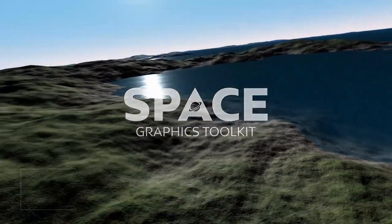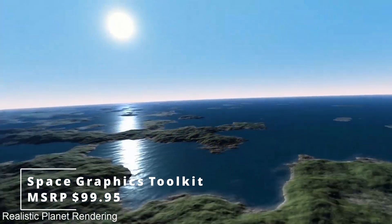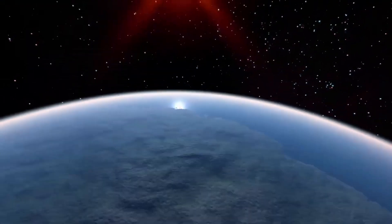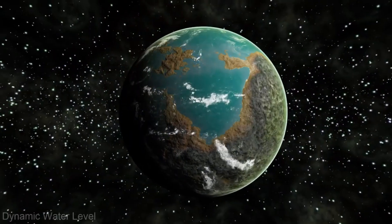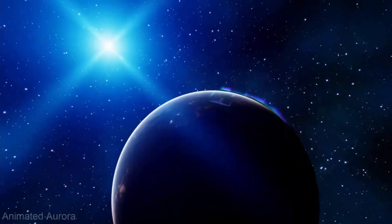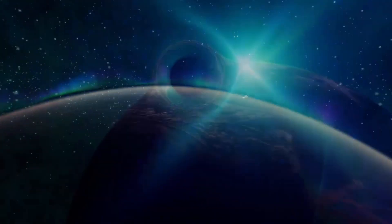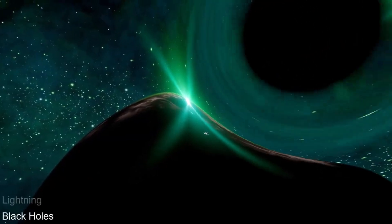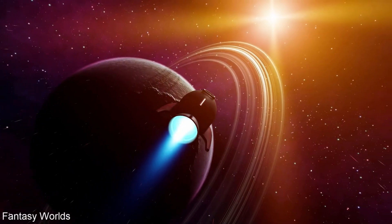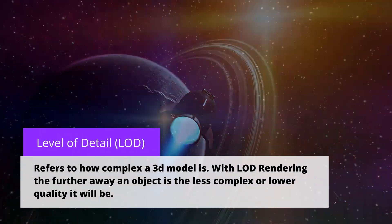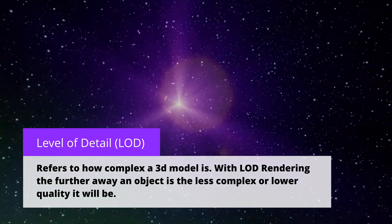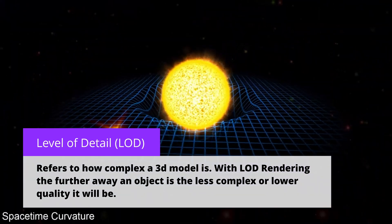Next up, we have the Space Graphics Toolkit, which is literally insane. This asset, also by Carl Wilkes, will be on sale 50% off — originally $99.95, and now $49.97. So if you literally need to do anything in space, this is your package, because it has a ton of different effects and functionality built in. Planet rendering, dynamic planet mesh LOD — which is level of detail, meaning that objects further away are rendered with less quality to save on performance — a volumetric atmosphere, shadow system, gas giants, procedural star fields, and a ton of different things.